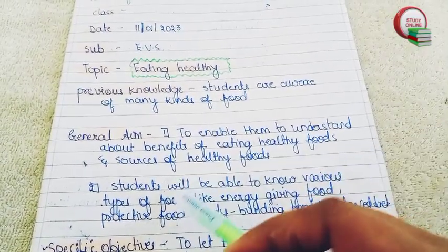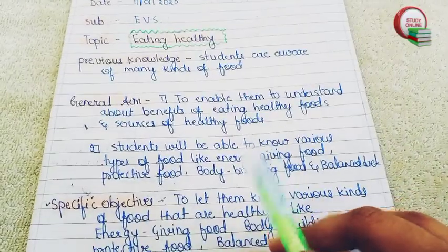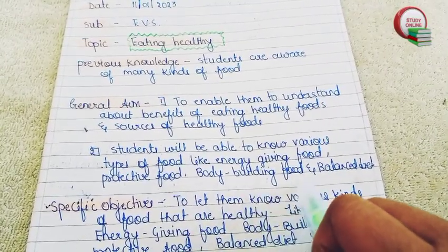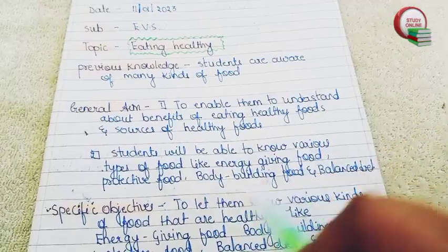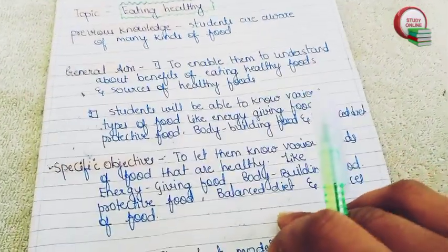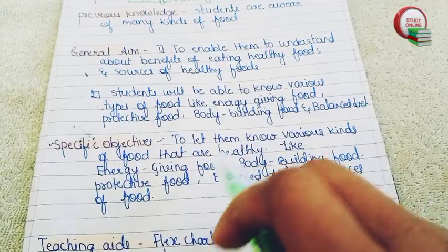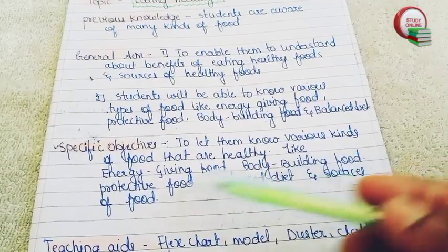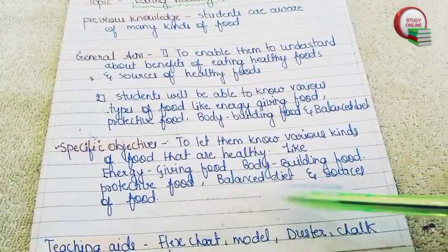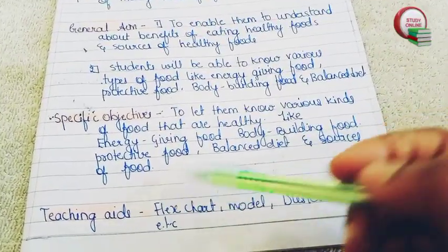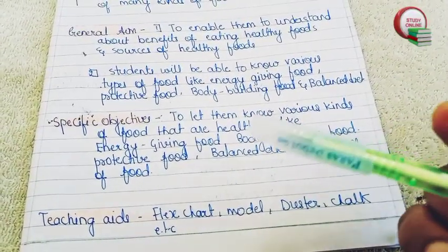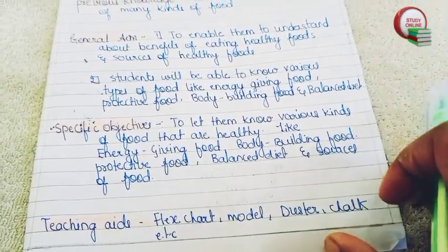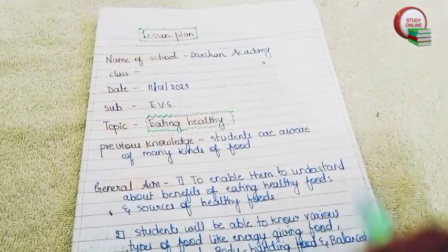Under general objectives, we want to tell students about the benefits of eating healthy foods and sources of healthy foods. Students will be able to know various types of food like energy-giving food, protective food, bodybuilding food, and balanced diet. For specific objectives, we write: to let them know various kinds of healthy food — energy-giving food, bodybuilding food, protective food, balanced diet, and sources of food. Whatever teaching aid is suitable for this topic, you have to carry that and mention it here.